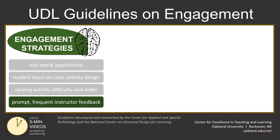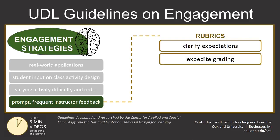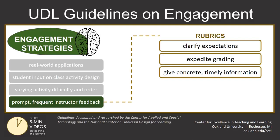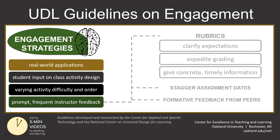Think about how prompt and frequent feedback to students might foster their engagement in a course. Use rubrics to clarify your expectations and expedite the grading process, while also giving concrete and timely information on how learners can improve their performance going forward. Or stagger assignment dates so that you don't get overloaded with providing feedback. Don't discount the formative feedback peers can provide, especially if you use a grading rubric or guideline.